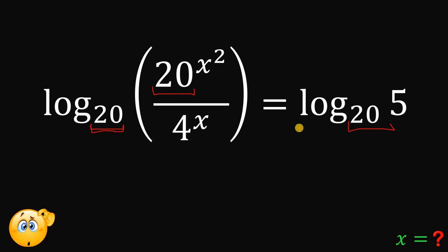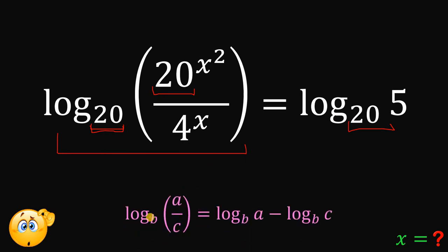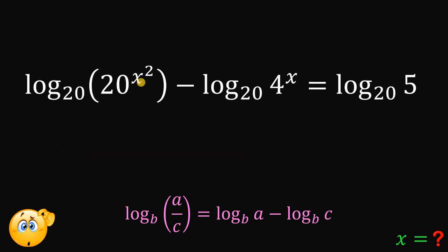You can use base 4 or base 5 if you want and still get the same result. Now, the left-hand side of our equation will use some logarithmic identities. If we have logarithm of a over c to the base b, this can be written as logarithm of a to the base b minus logarithm of c to the base b. So the left-hand side becomes logarithm of 20 raised to x squared to the base 20, minus logarithm of 4 raised to x to the base 20, equals logarithm of 5 to the base 20.